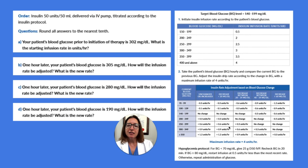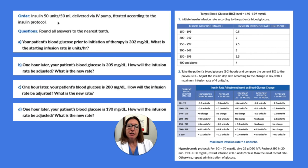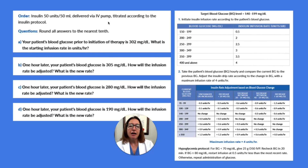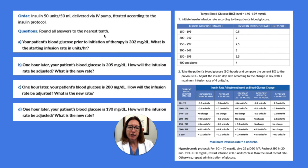Let's work through an example problem regarding an insulin drip. We have an order for insulin 50 units in 50 mL to be delivered via IV pump and titrate according to the insulin protocol. We need to round all of our answers to the nearest tenth.